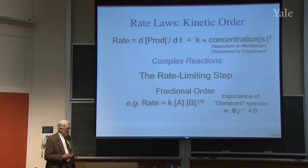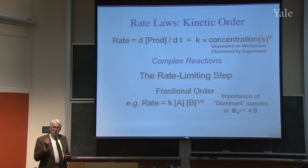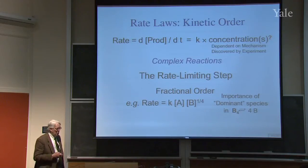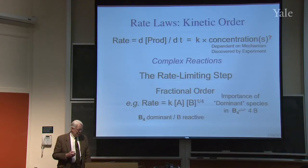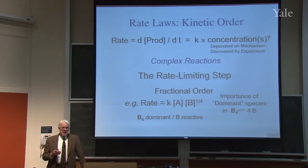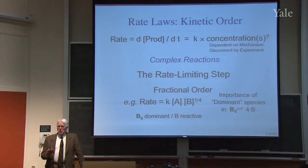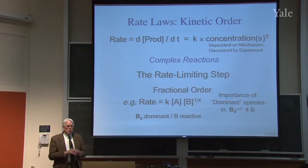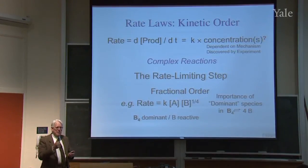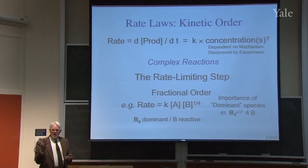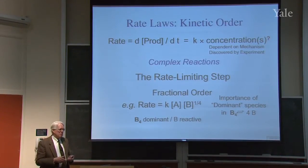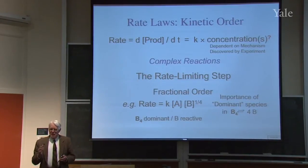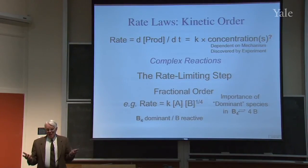For example, suppose the dominant species were a tetramer — four units — but the reactive species were a monomer, a single B unit. So you have the equilibrium between B4 and 4B. Now if B4 is dominant and B is reactive, then if you increase the concentration by a factor of 8, you increase B4 by a factor of 8, since it's practically all the stuff — the dominant species.